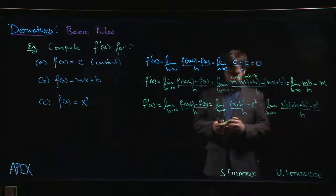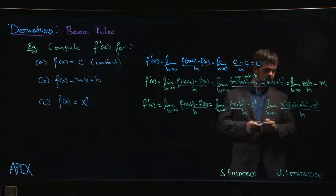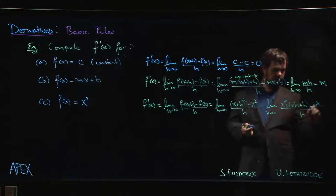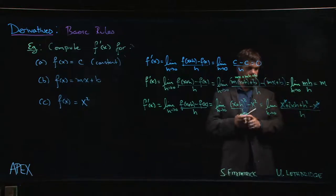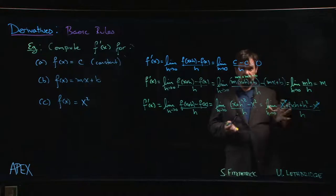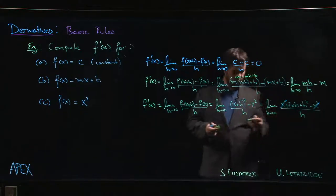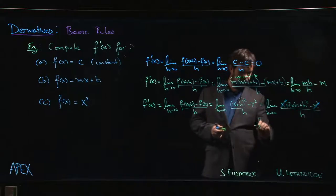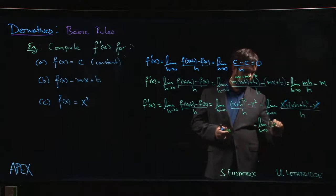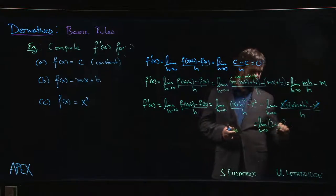As expected, the terms that don't involve h cancel. We can divide by h in the terms that are left. We have the limit as h goes to 0 of (2x + h), which leaves us with 2x.